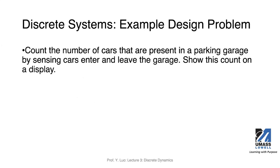Let's start with a concrete example. Let's say we have a public garage. Cars are going into the garage and coming out at any time. What we want to do here is, looking at the whole system, be able to show the number of cars or number of available parking spots in this garage. For this particular example, we want to count the number of cars currently in the parking garage. To do that, we need some sensors to sense the cars entering and leaving, and we want to show this count on some sort of display.